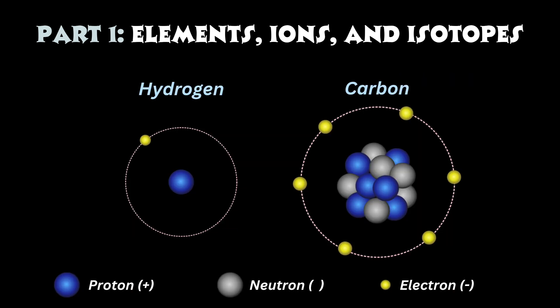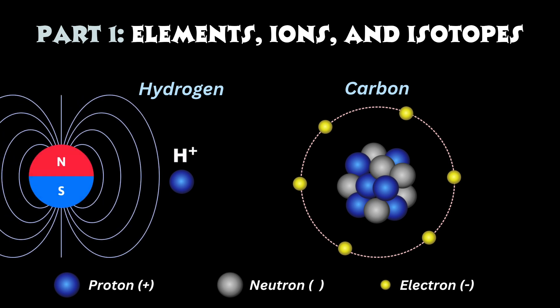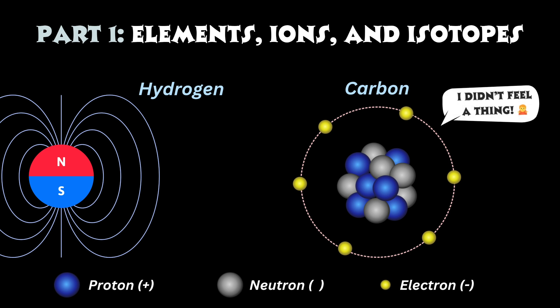For any given element, the number of negatively charged electrons tends to be the same as the number of positively charged protons, which balances the atom. If that number differs, then the element becomes an ion, whose net charge is defined by the number of protons minus the number of electrons. I won't dwell on ions because they are more relevant to understanding bonding and reactions between molecules, except to say that due to their charge, ions respond to magnetic fields. Neutral atoms don't. Remember that point for later.